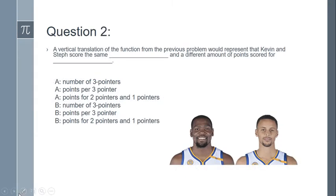Question two states: a vertical translation of the function from the previous problem would represent that Kevin and Steph score the same. What do they score the same as? So we're going to pick one of these options here. Do they score the same number of three-pointers? No, remember x, our input variable, that was the number of three-pointers that each of them made, and that varies. That can be different.